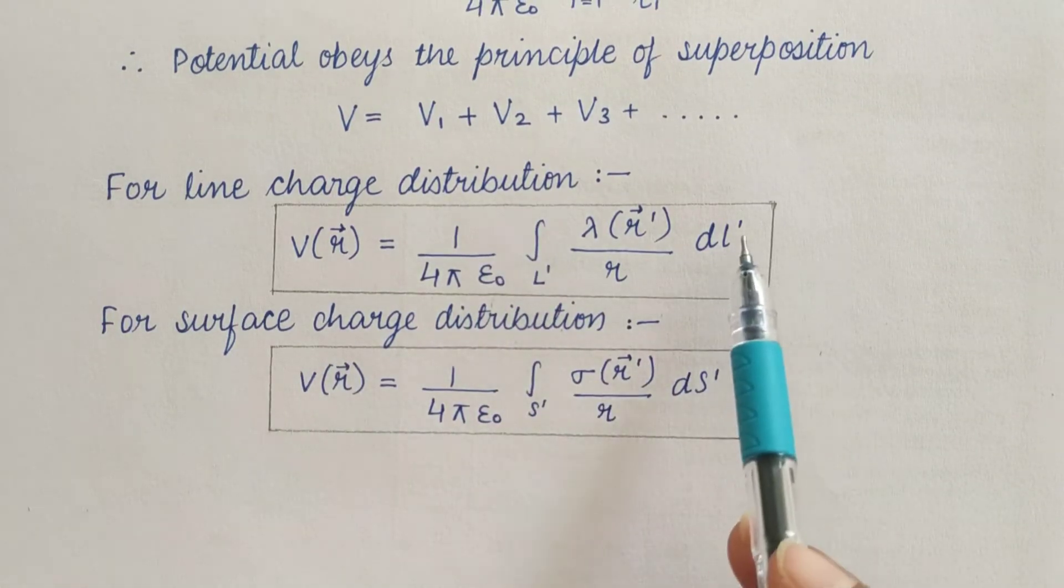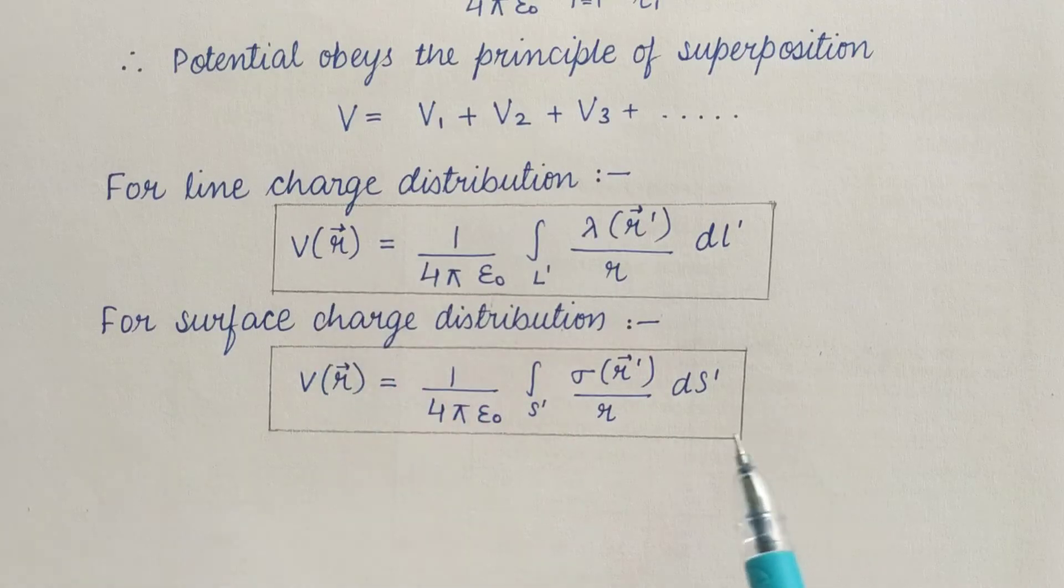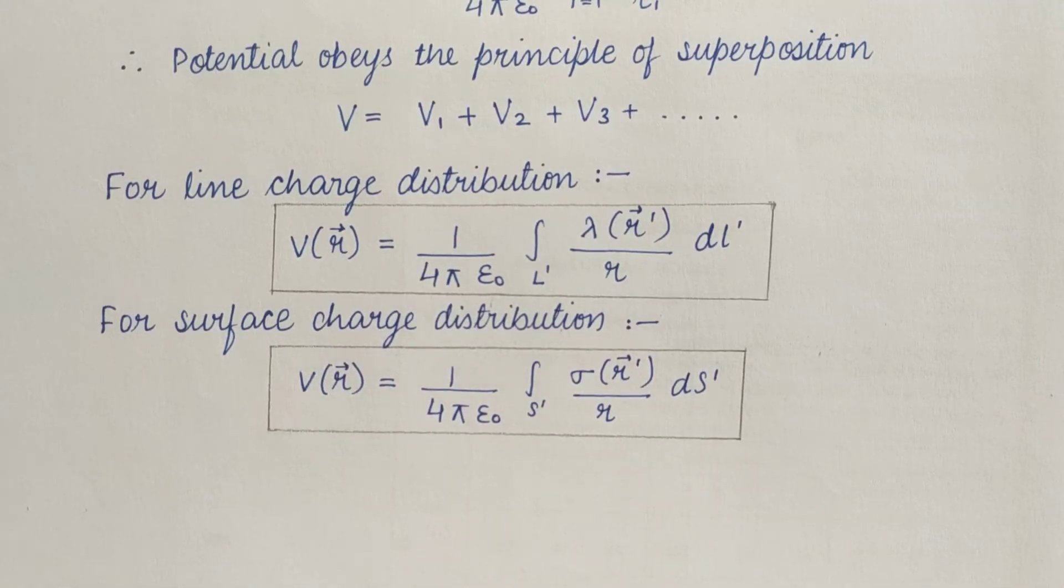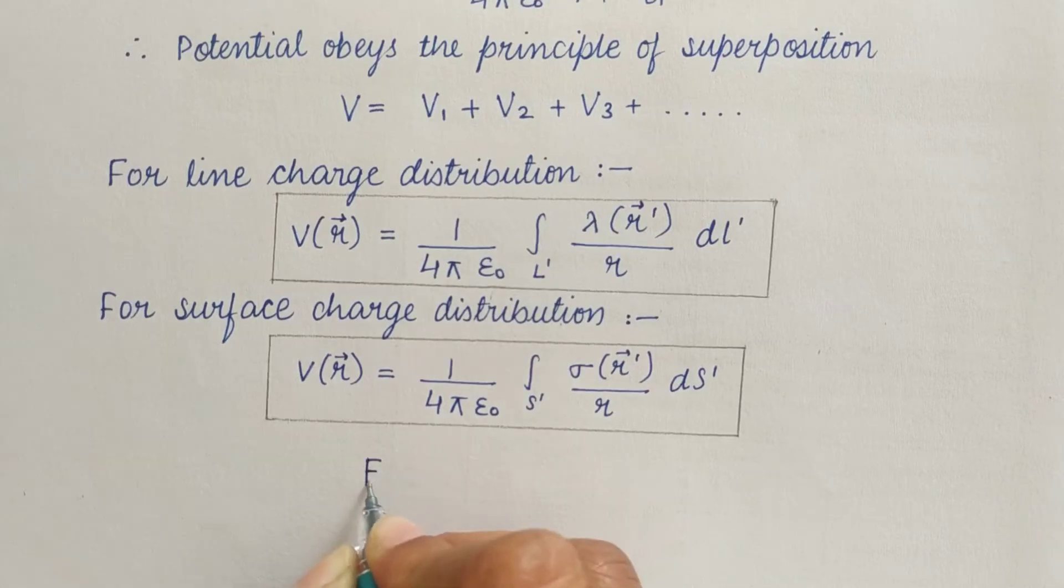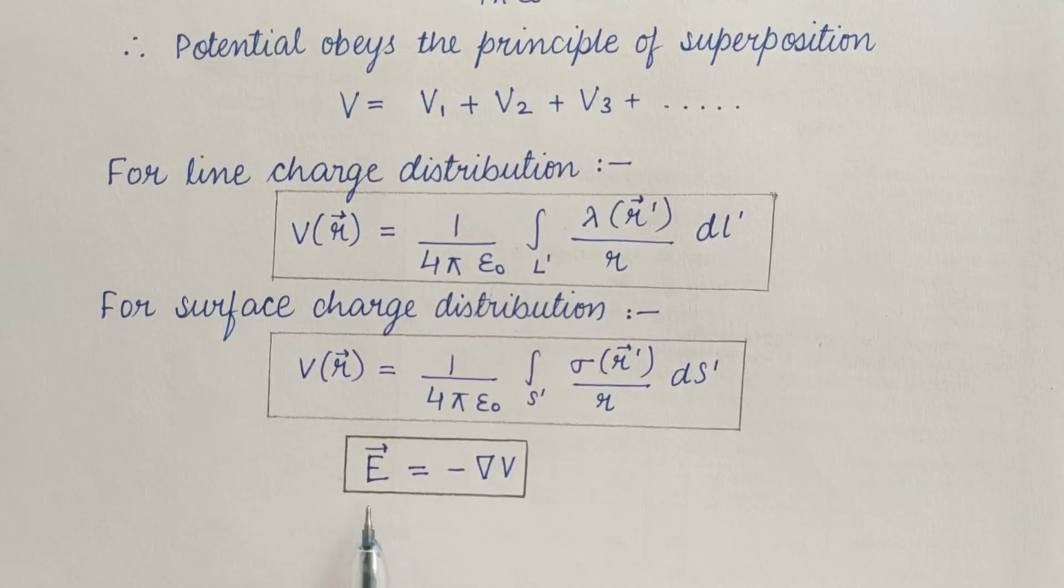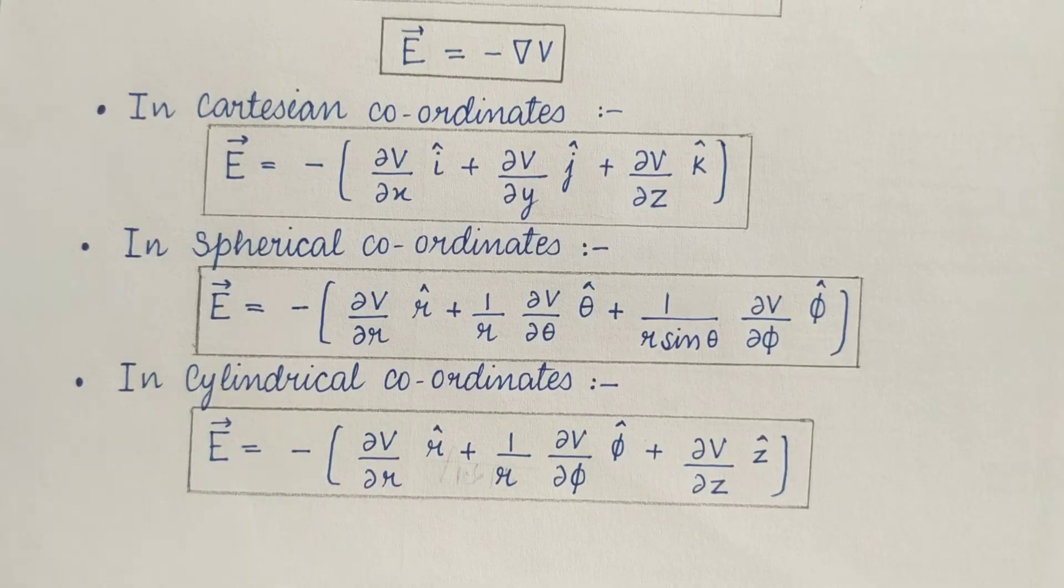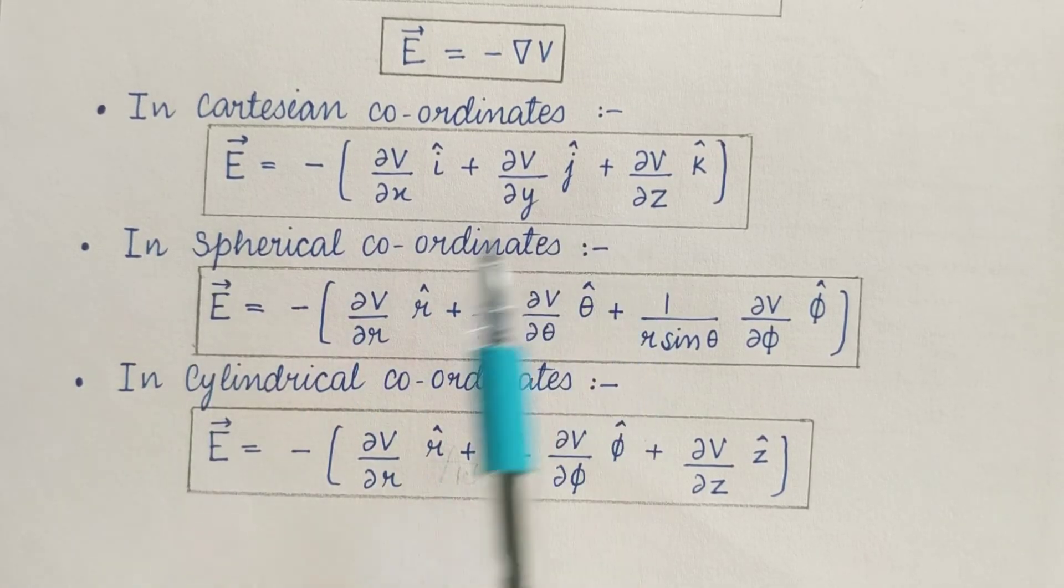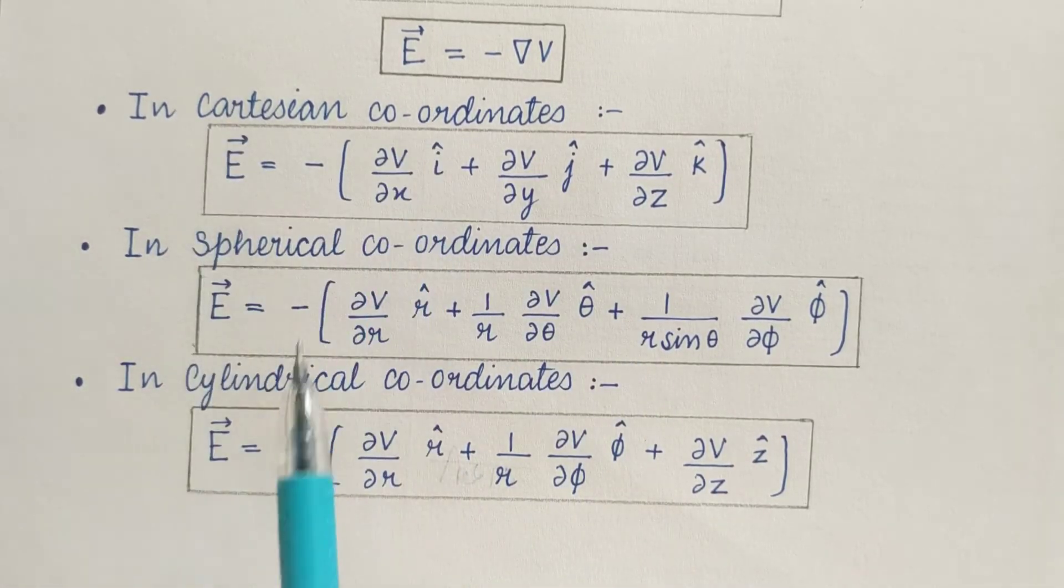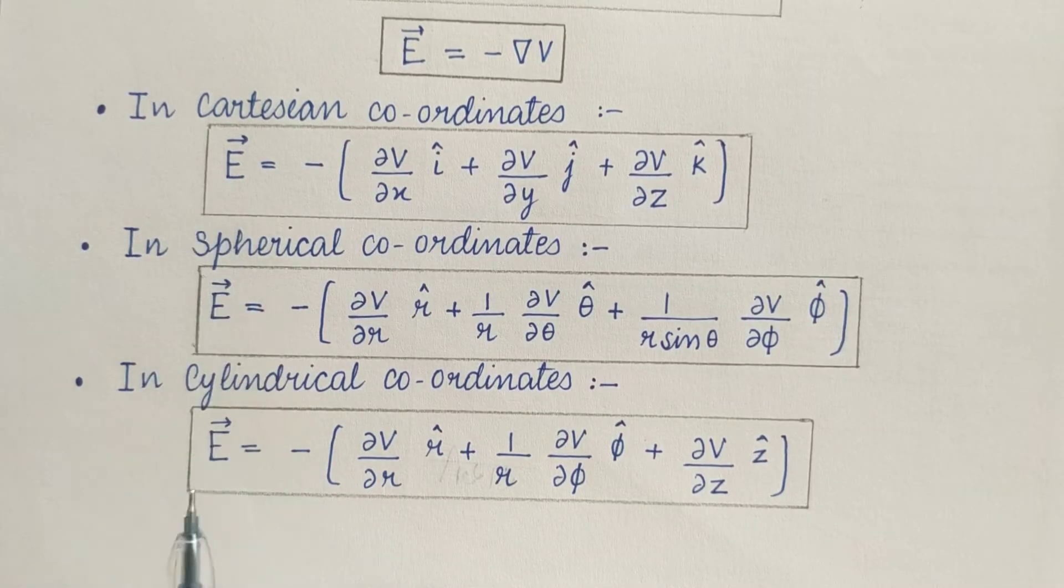The values of E, that is E equals minus del V, can be written in three coordinates. These are the values of E in different coordinates: cartesian, spherical and cylindrical. These values will help you in solving the numericals.